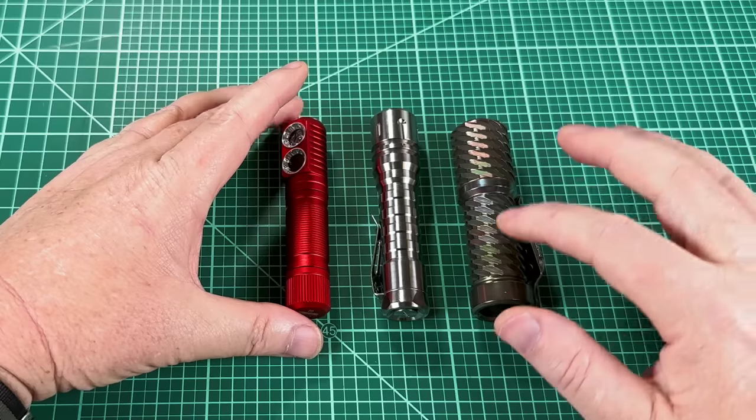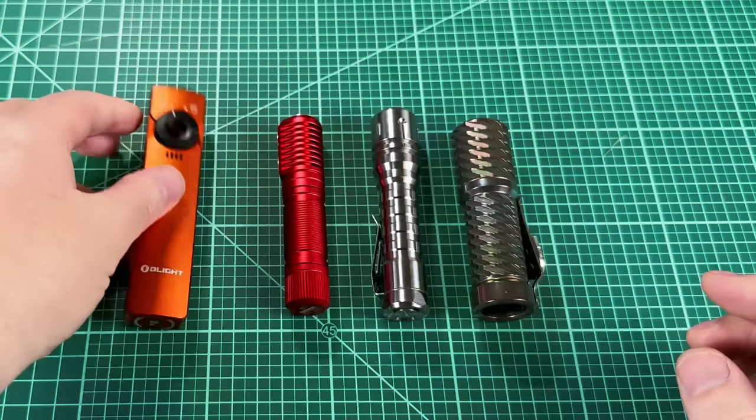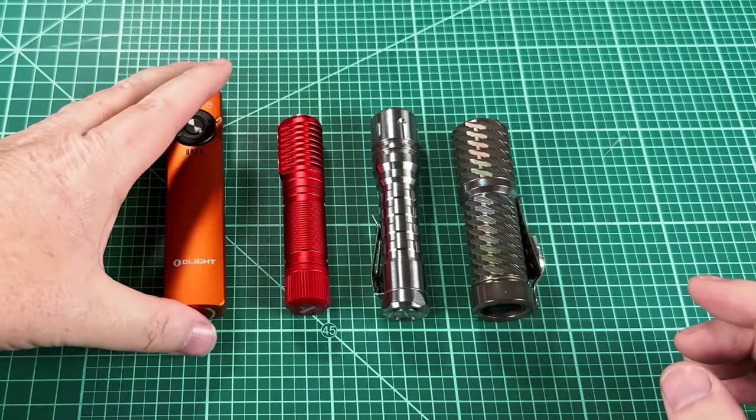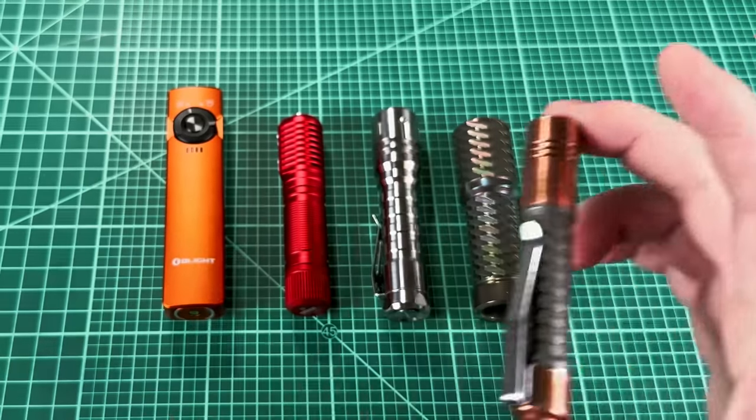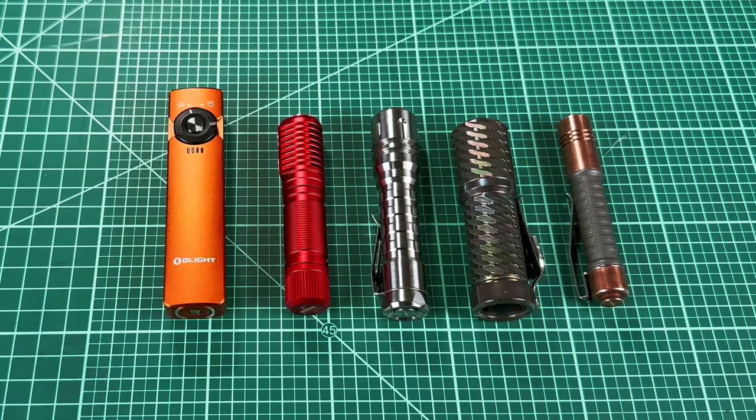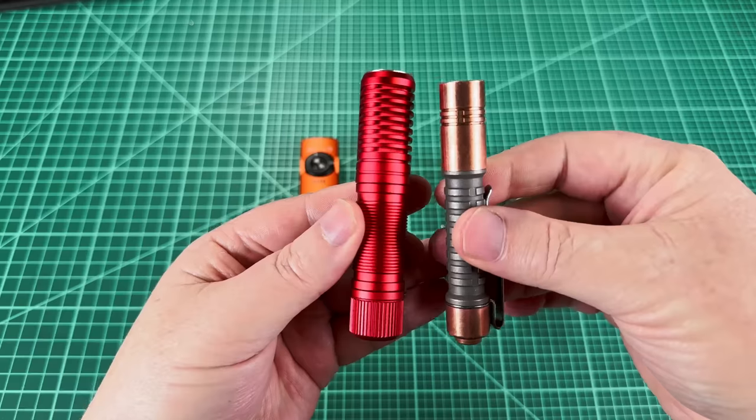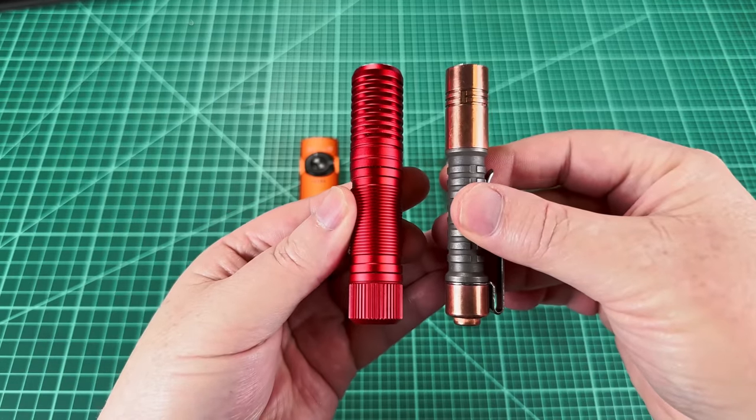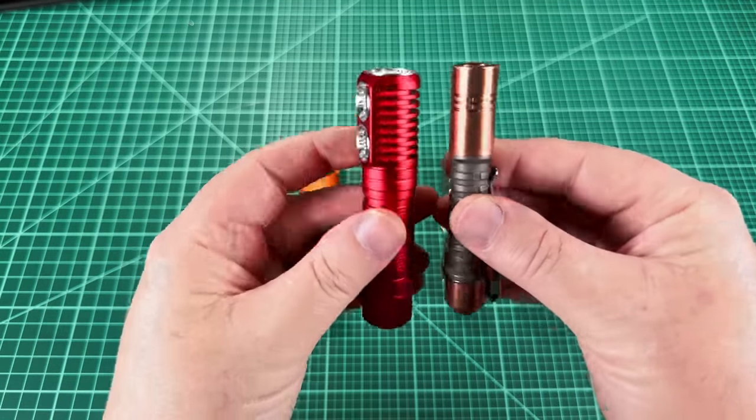So let's take a look against some other common flashlights. Here is an 18350 Custom Hanko. Here is the Olight Arkfeld, this is the UV version. And I'm even going to throw in a smaller flashlight, the Pineapple Mini, a AAA sized flashlight, a 10440. And I want to point out that if you look at them, they're about the same length. The 10440 is thinner, but you're going to get a much bigger battery in here with higher amperage and longer runtime.